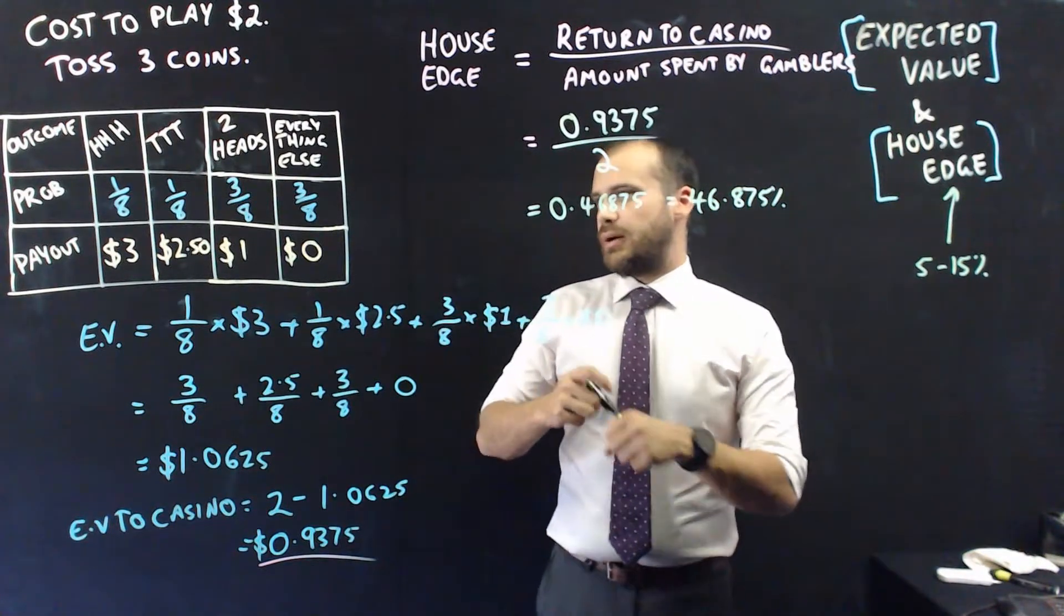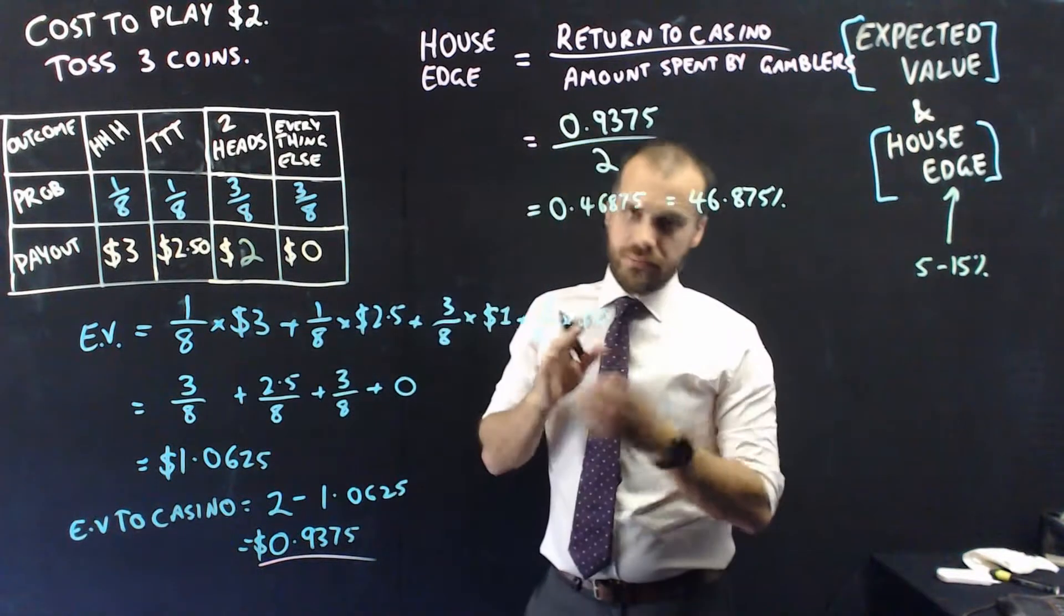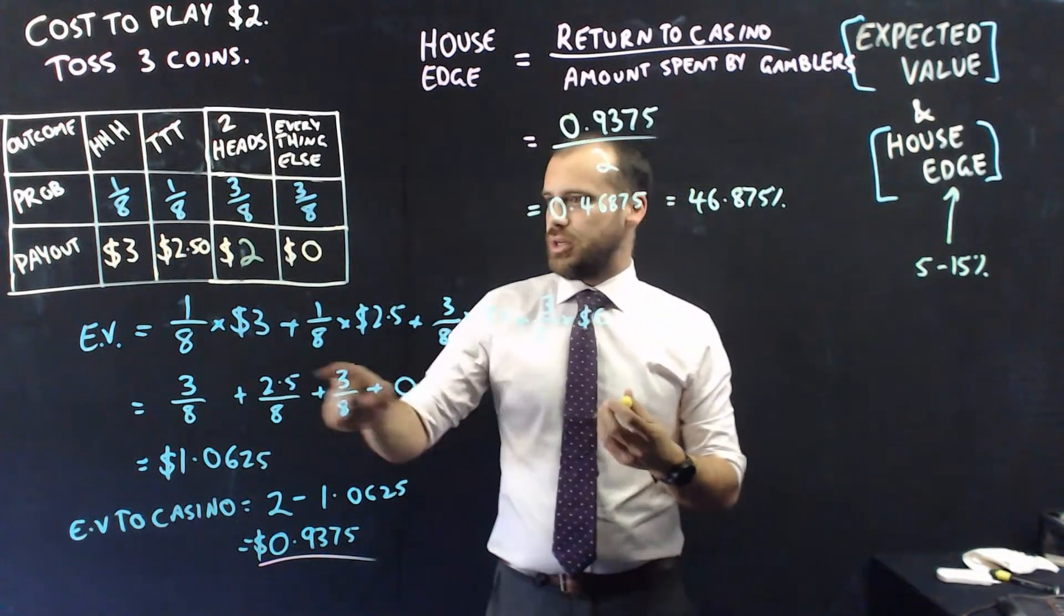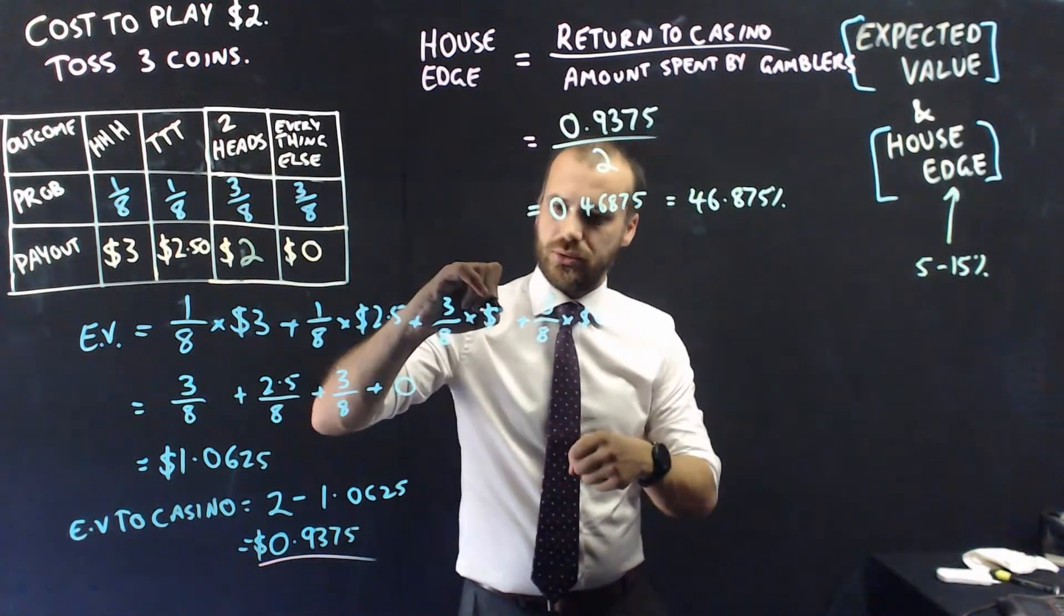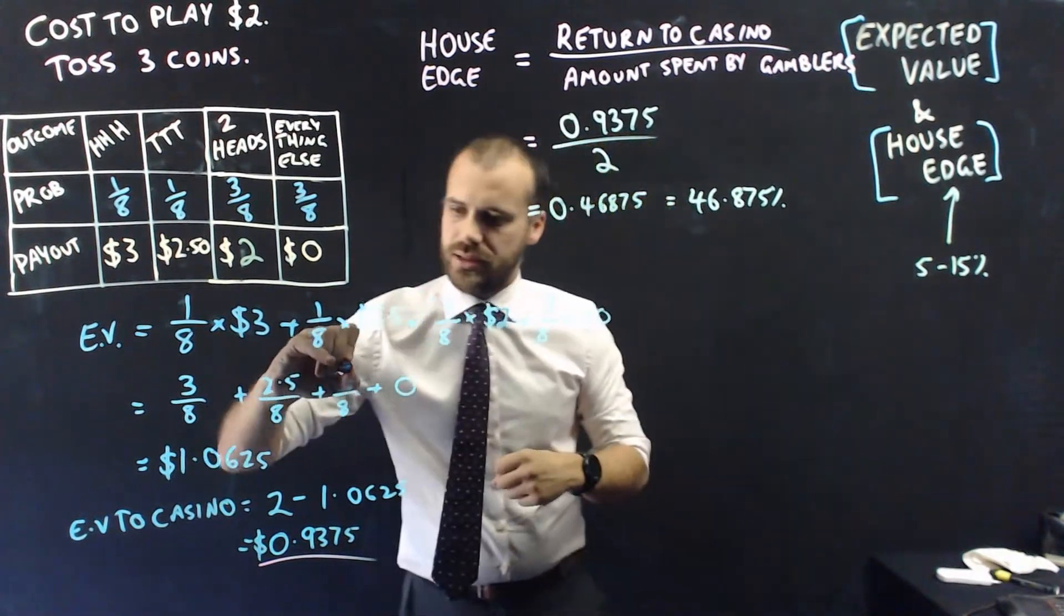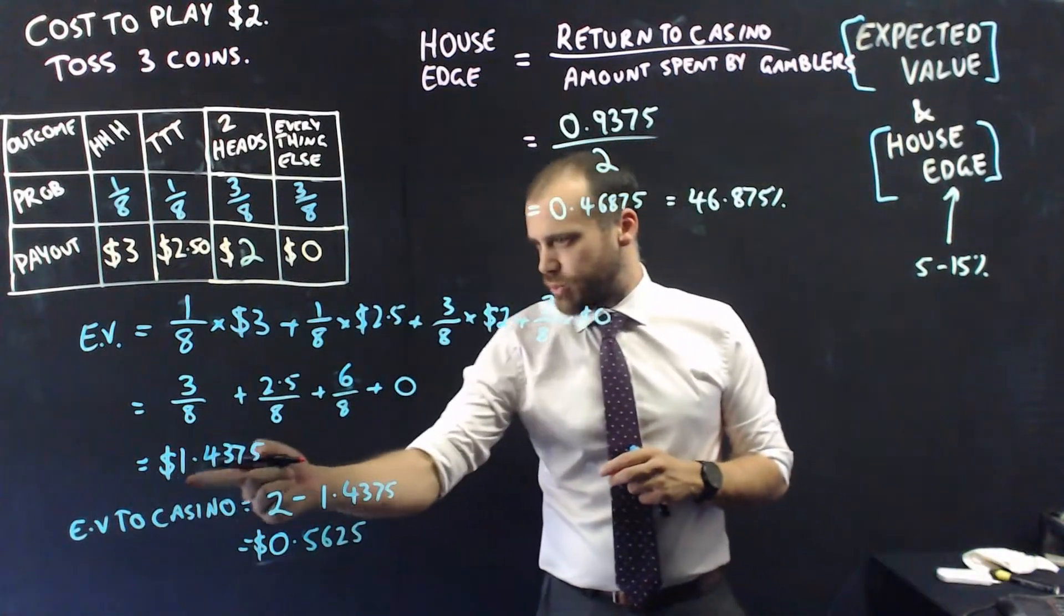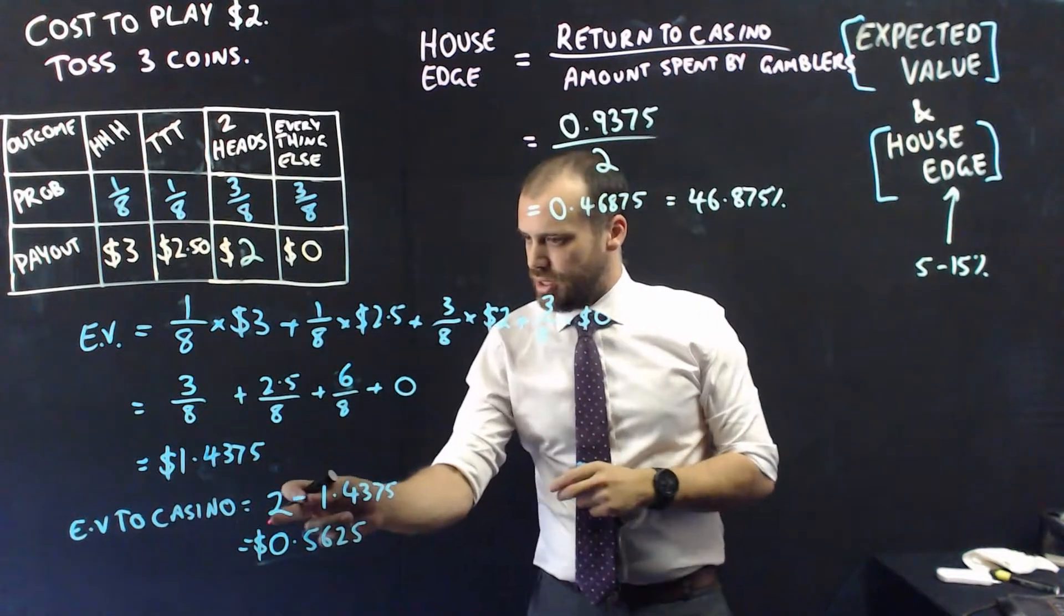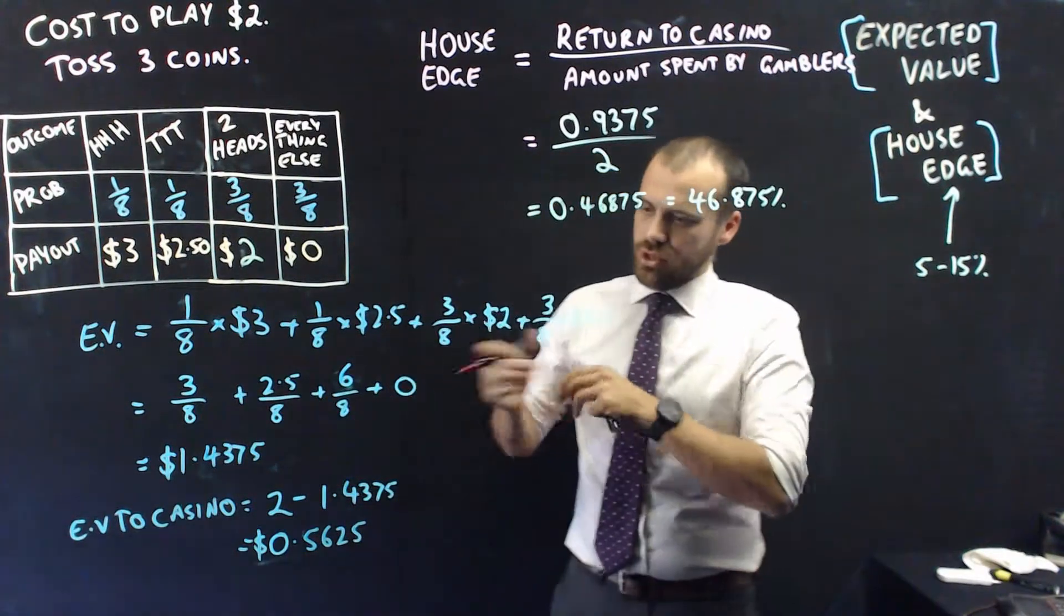So let's think about how to alter this game slightly so that it's more fun to play and the house edge is more reasonable because you need to keep people playing. So let's give them their money back if they get two heads. That change is that number there becomes a 2, which means the expected value to the casino is $0.5625.